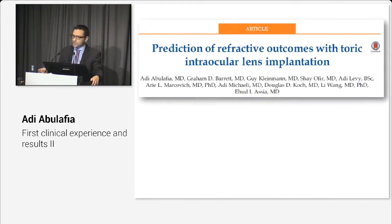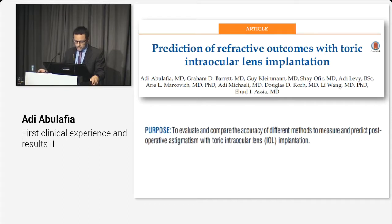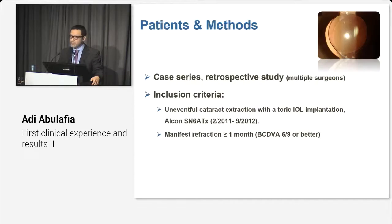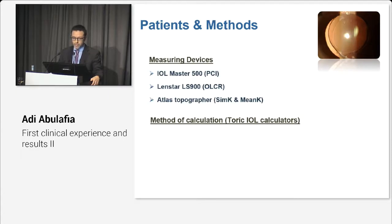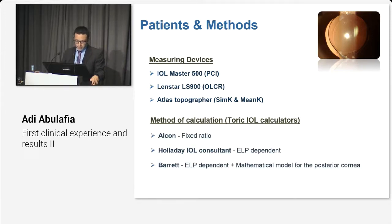I want to share outcomes from one of our recent papers in which we compared the accuracy of different methods to measure and predict post-op astigmatism with toric IOL implantation. This was a retrospective study including patients who had uneventful cataract extraction with toric IOL implantation. For measuring devices, we compared the IOL Master 500, LENSTAR, and the ATLAS topographer. For methods of calculation, we compared the ALCON, HOLLADAY, and Barrett Toric calculators.